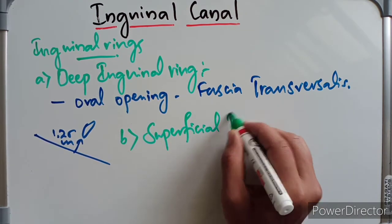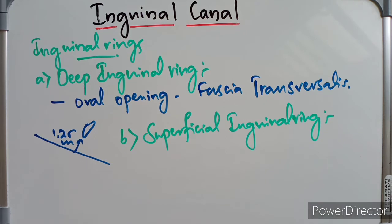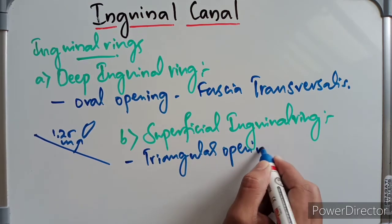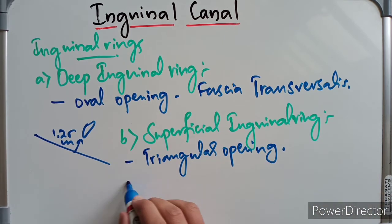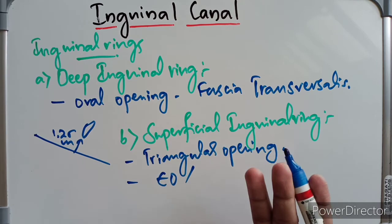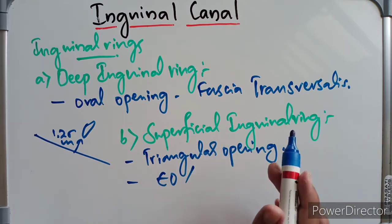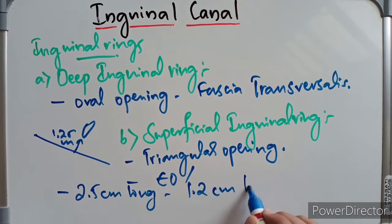The superficial inguinal ring is a triangular gap in the aponeurosis of the external oblique. The pubic crest forms the base of this triangle, and the sides are called the crura, which meet laterally to form an obtuse apex. Near the apex, the two crura are united by intercrural fibers. It is approximately 2.5 centimeters long and 1.2 centimeters at the base.